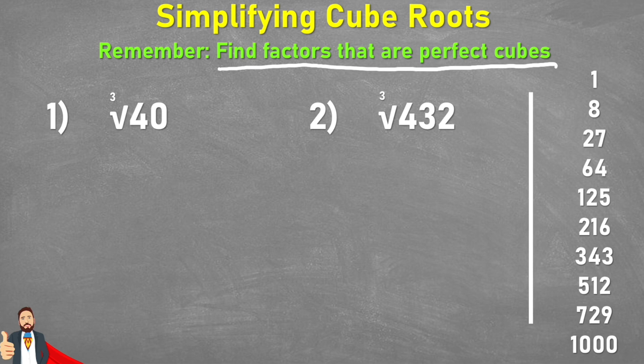So if we look at the first question, we have the cube root of 40. And at the moment, 40 is not a perfect cube. So therefore what we're going to do is we're going to look at our perfect cubes. And thankfully I have written the first 10 down here on the right hand side.